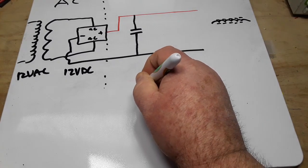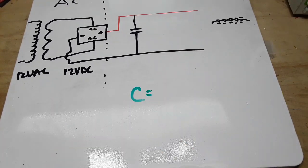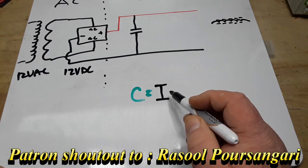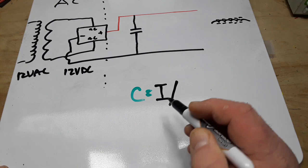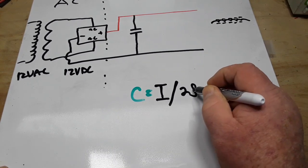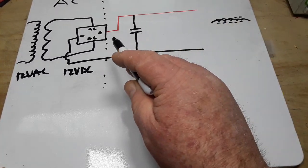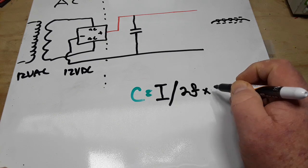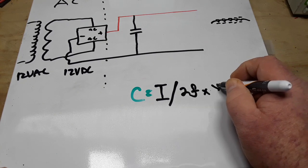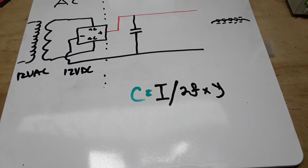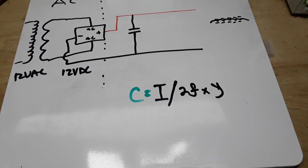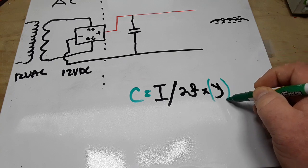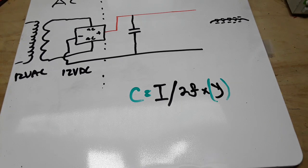So to figure out our value of capacitor, C, is going to be equal to the current that we're expecting, I, divided by twice the frequency. Because remember, we're using that full-bridge rectifier. So our 60 hertz coming in is going to be 120 volts coming out times what we will accept as our ripple. Are you with me so far? The one thing to keep in mind here is that the only place we are talking about voltage in this formula is in the peak-to-peak part.